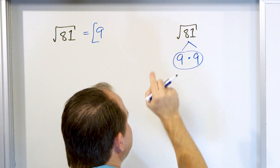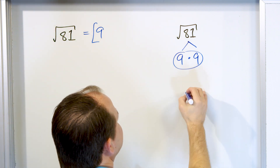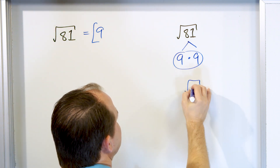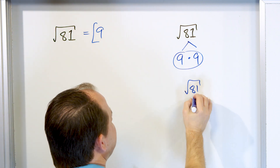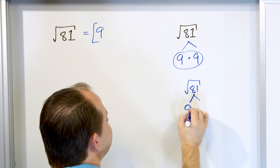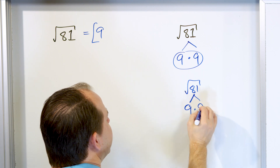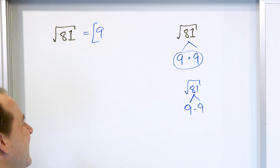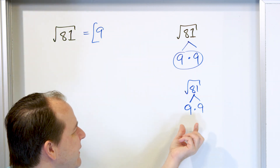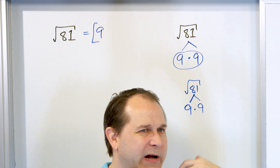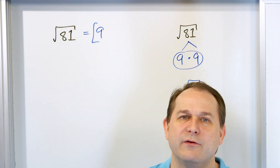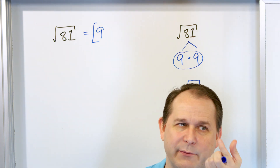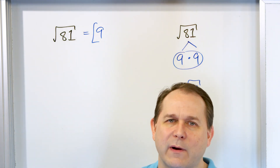Now I want to show you something about this. Here we had the square root of 81. We said 9 times 9 is 81 and we identified this as a pair.